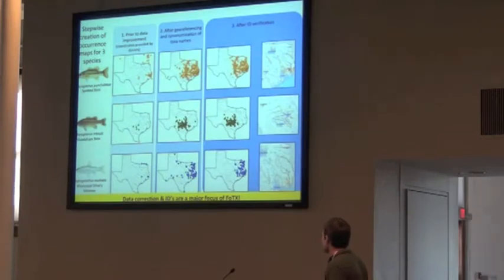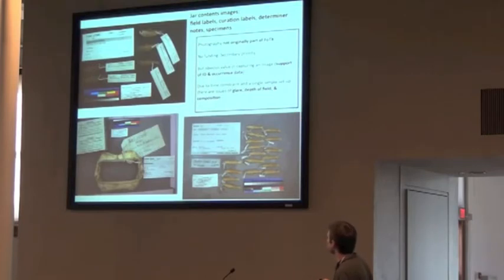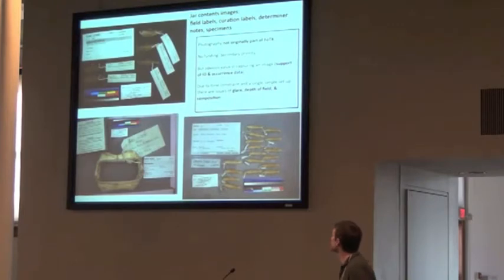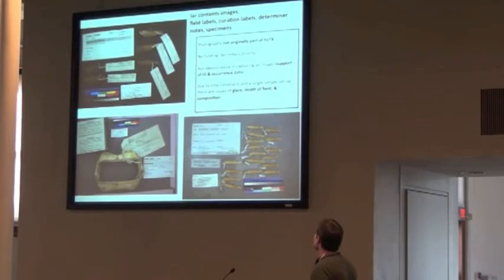Data correction IDs are a major focus of the Fishes of Texas, but we're working on these images. These contain field labels, curation labels, determiner notes, as well as specimens. The photography was not originally part of our Fishes of Texas project — we didn't have funding to do it. It's been a secondary priority, but we recognize the obvious value when you open a jar and take a photograph of specimens within the jar. These support our IDs as well as report current data.